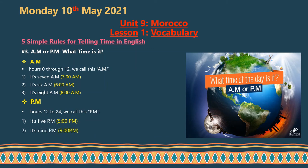For example: 5 PM means 5:00 PM. 9 PM means 9:00 PM. And 1 PM means one o'clock in the afternoon.